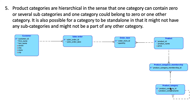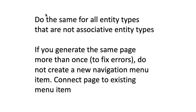No page for product category separately right now, because sales order and order item go together, and product category and product category membership go together. So to summarize: when I said do the same for all entity types that are not associative entity types, that's not completely correct. For every associative entity type, determine what it's most logically connected to. Order item is connected to sales order, so you'll create a master detail page for both together. Similarly, product category and product category membership go together. At this point, you only need a page for product and customer.